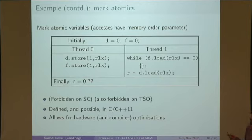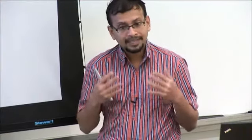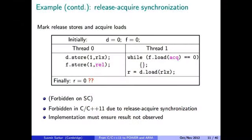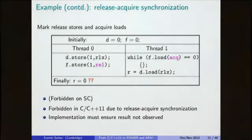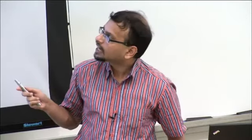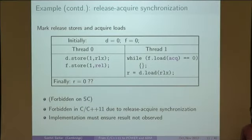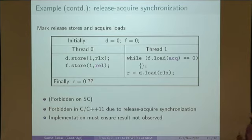On x86-like machines with TSO, you don't get this reordering by itself, but an optimizing compiler can still reorder stores and loads. If you really want to program message passing correctly in C11, you need to use different parameters: that store must be a release store and that load must be an acquire load. If you do both of those things, C11 says that because the acquire load reads from a release store, there is enough synchronization, and that load is never allowed to read an old value.